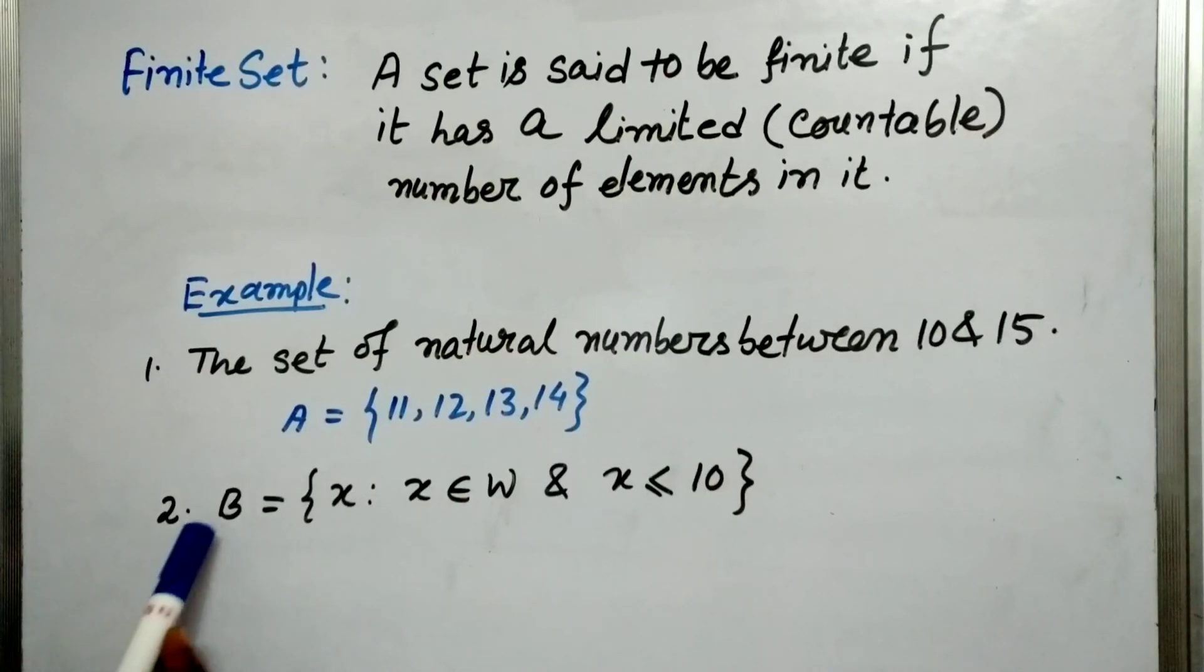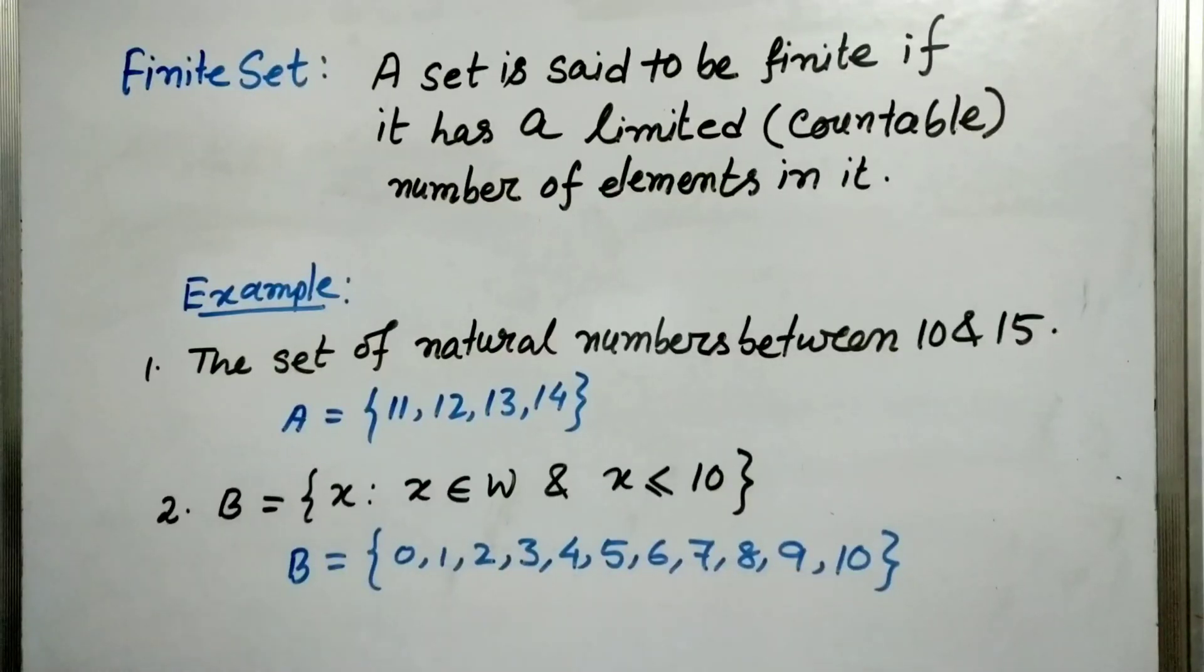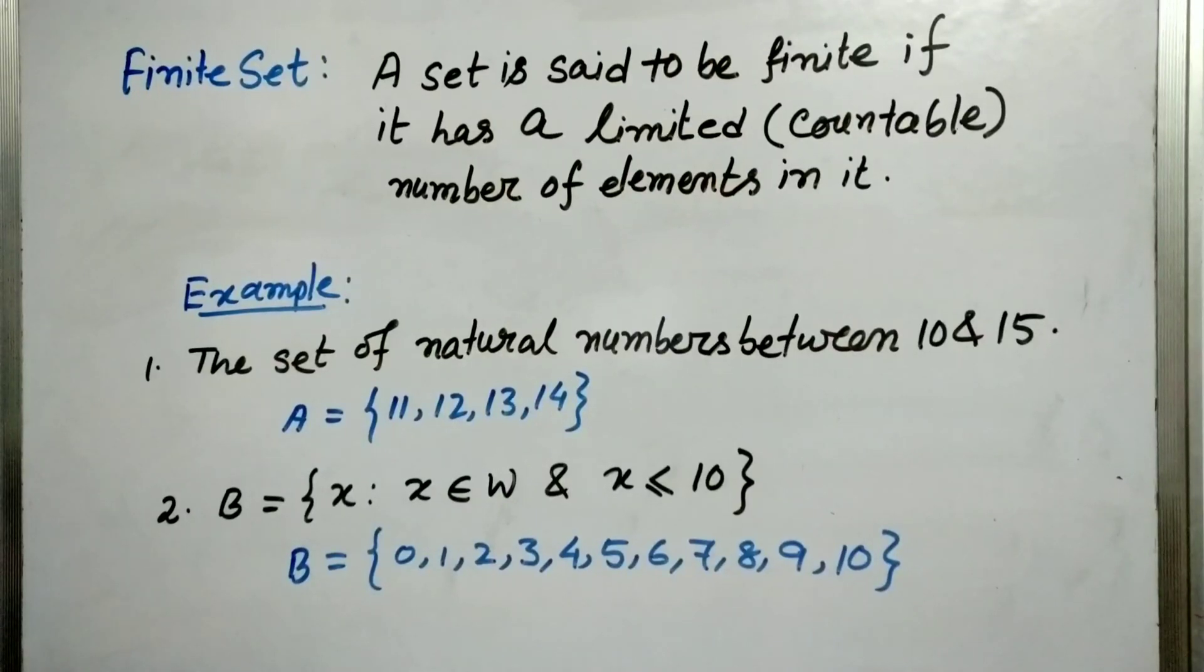Now let us take another example. B is equal to {x such that x belongs to W and x is less than equal to 10}. So definitely B will be {0, 1, 2, 3, 4, 5, 6, 7, 8, 9, 10}. Because it was less than equal to, so that is why 10 has been considered. And because the whole number starts from 0, so we have counted from 0 and ended at 10. So we cannot go further than that. So we can count that there are 11 elements. And most importantly here is an end. So we can end somewhere, so that is why it is countable. So this is a finite set.